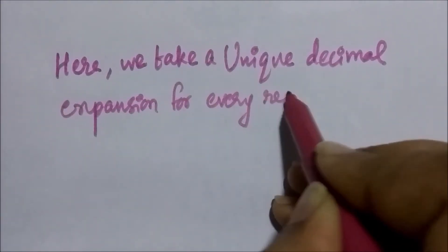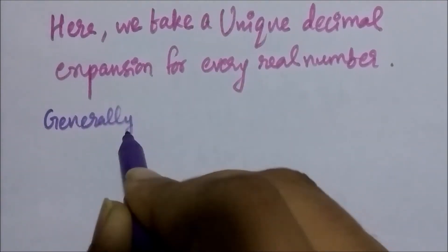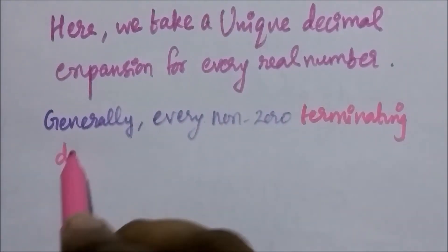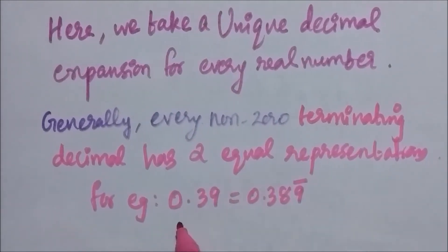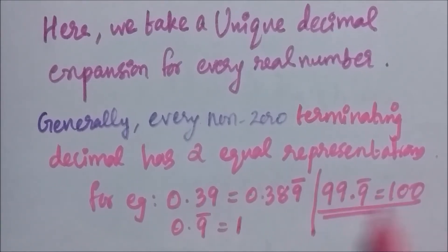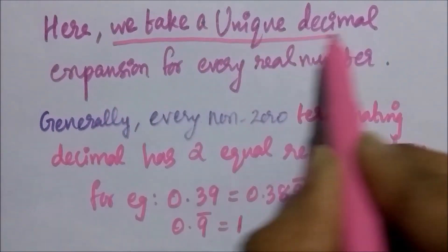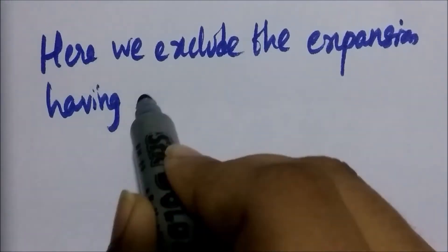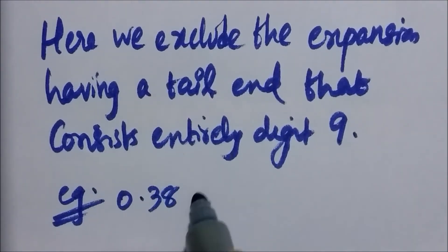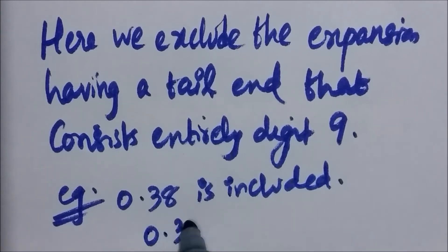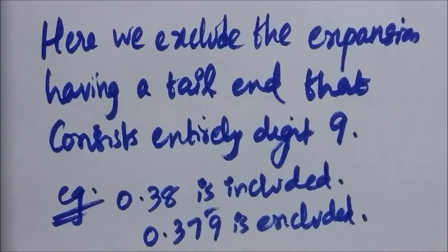Here we take a unique decimal expansion for every real number. In general, every non-zero terminating decimal has two equal representations — for example, 0.39 is the same as 0.38999... and 0.9 repeating is the same as 1. So we exclude expansions having a tail end of digits entirely 9. For example, 0.38 is included but 0.37999... is excluded.